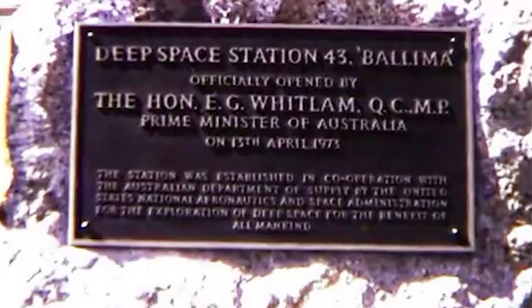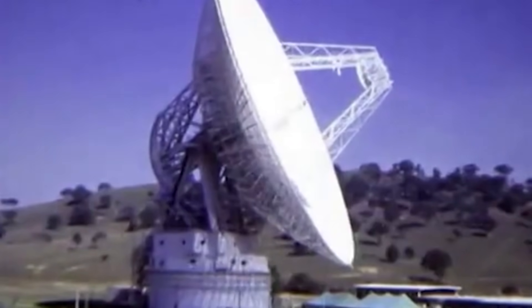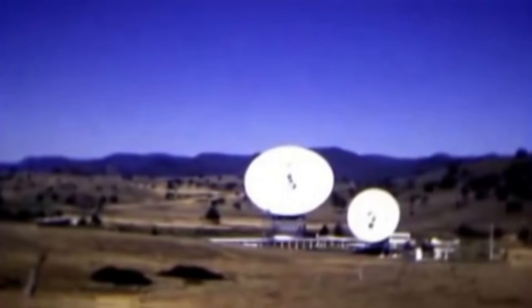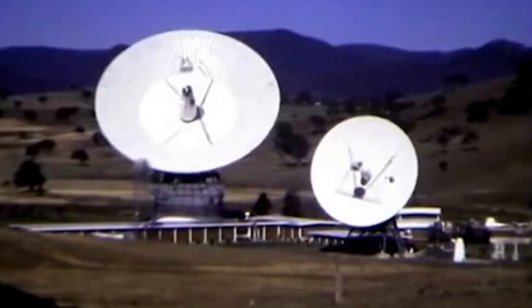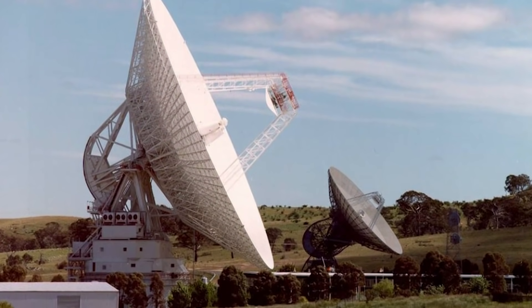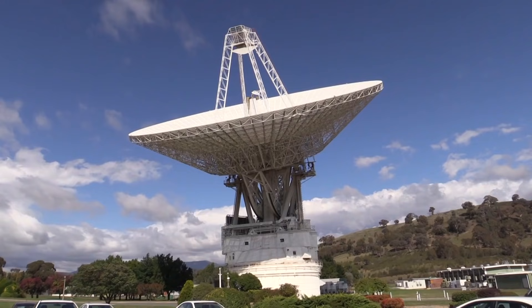Deep Space Station 43 was opened in 1973. Its original diameter was 64 meters, 210 feet, but was expanded to 70 meters, 230 feet, in 1987.